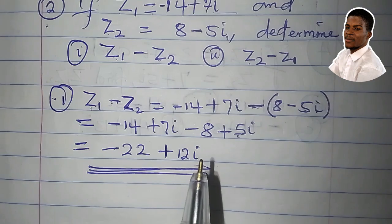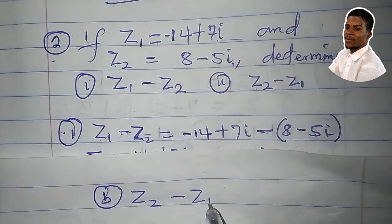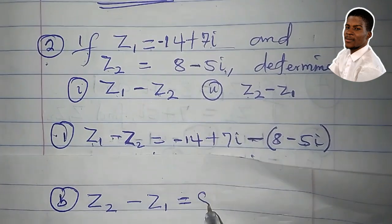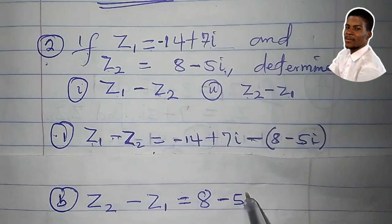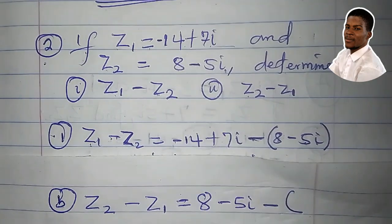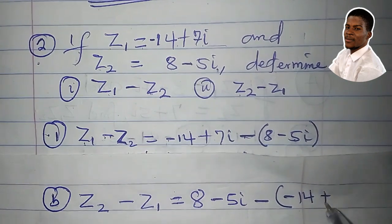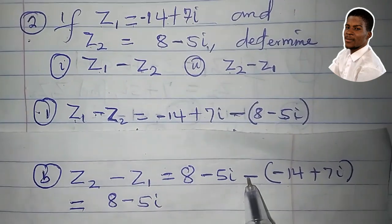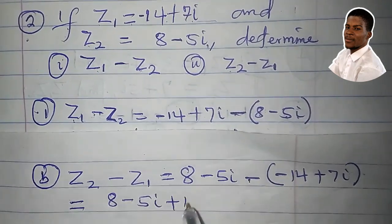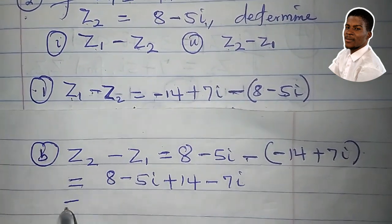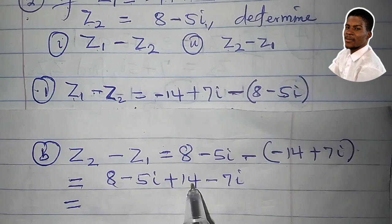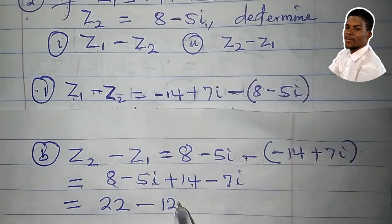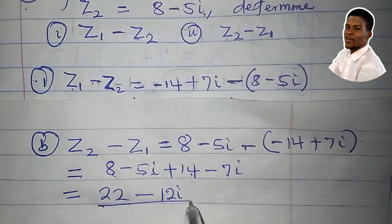The second one says z2 minus z1. For z2 minus z1, z2 is 8 minus 5i minus z1, which is minus 14 plus 7i. So 8 minus 5i. The minus 1 will enter the bracket and we'll have plus 14 minus 7i. 8 plus 14 is 22. Minus 5i minus 7i is minus 12i. This is z2 minus z1.